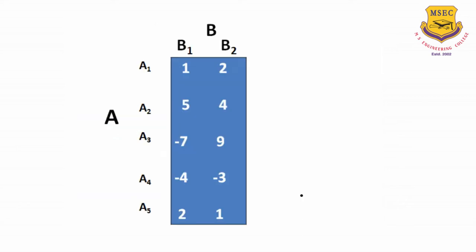Next we have another situation: in previous problems we saw a 2xN matrix, but now we have an MX2 matrix. Here A is playing different strategies A1, A2, A3, A4, A5, and B is playing only B1 and B2. How do we solve this problem using the graphical method? Again, we convert it into a 2x2 matrix by finding out graphically which 2 strategies of A must be selected.